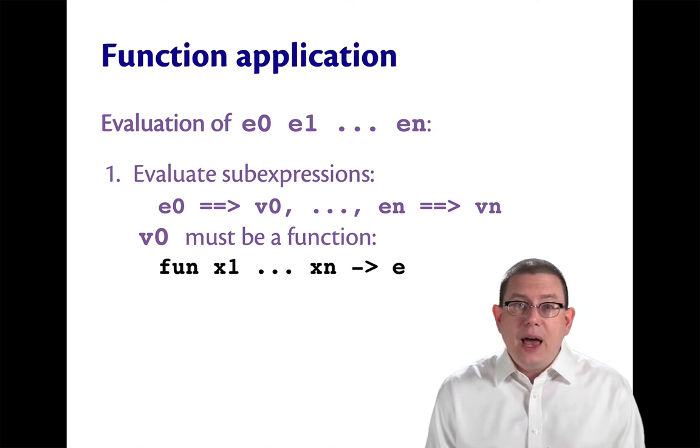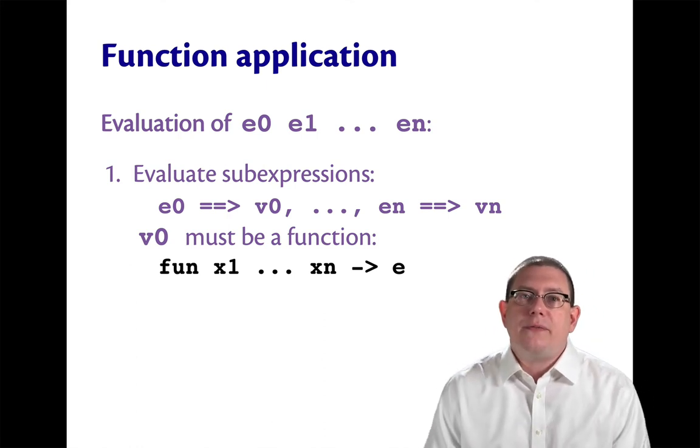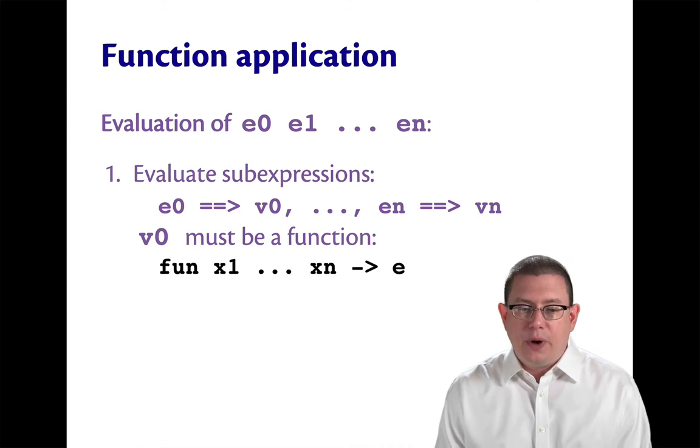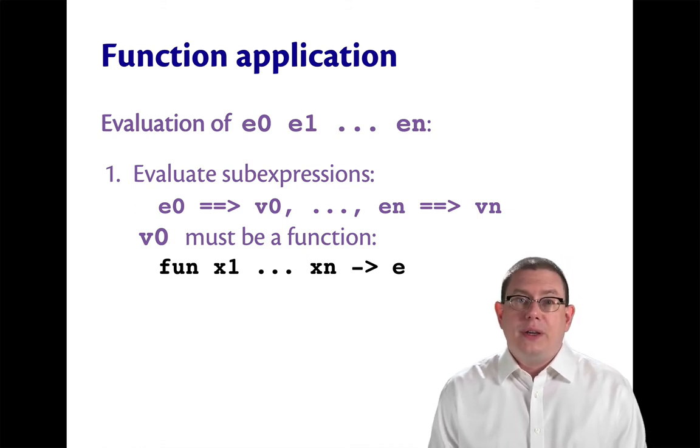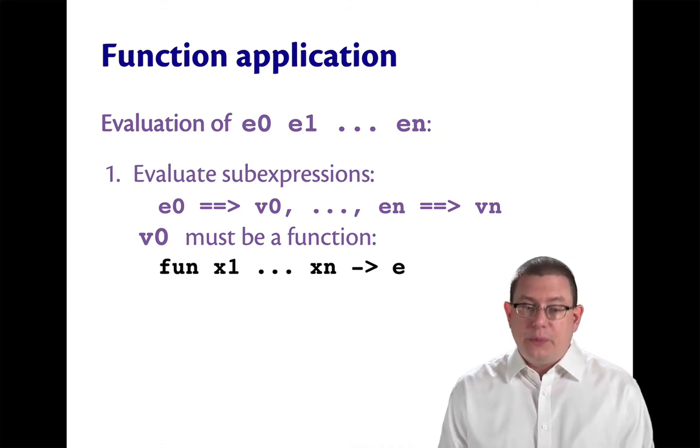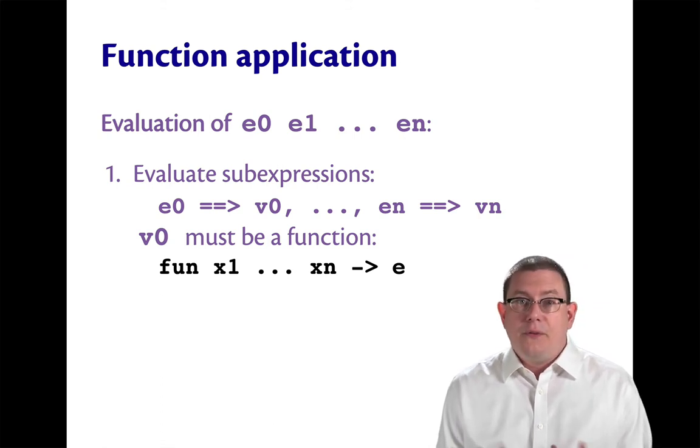After that's done, e0 needs to have evaluated to a value v0 that is a function. It has to be a function. We can write it as an anonymous function here: fun x1 through xn arrow e.